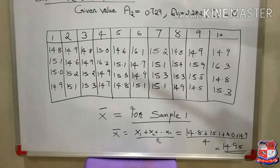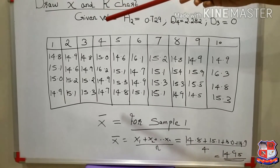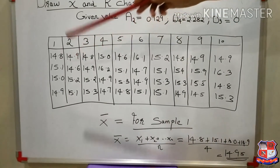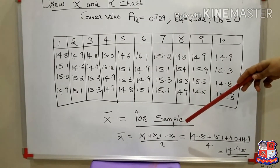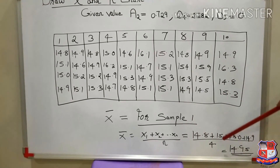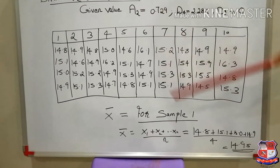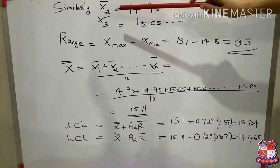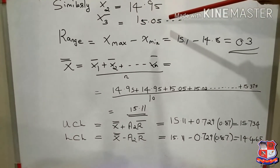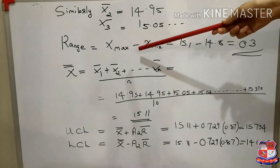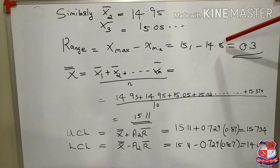First, find x̄ for sample 1. The given data is: x1 = 14.8, x2 = 15.1, x3 = 15.0, x4 = 14.9. Using x̄ = (x1 + x2 + … + xn) / n, you get x̄₁ = 14.95. Similarly, x̄₂ = 14.95 and x̄₃ = 15.05. Range R = x_max − x_min = 15.1 − 14.8 = 0.3.